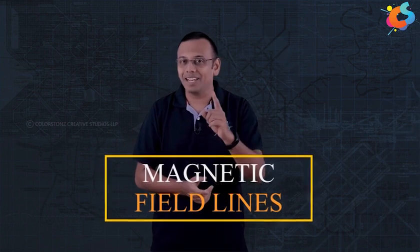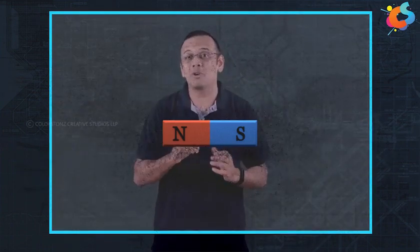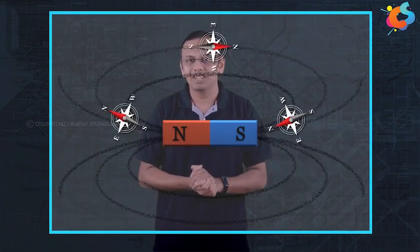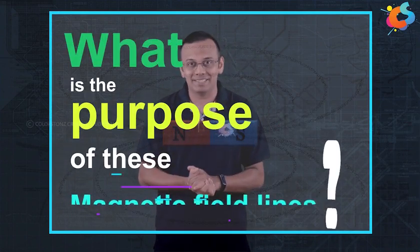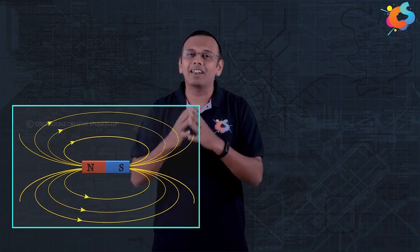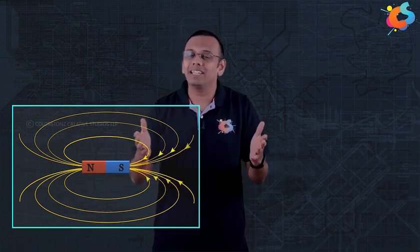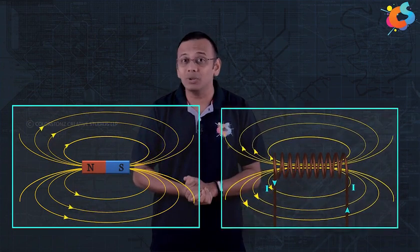If you recall, in 10th class, you must have studied about magnetic field lines. You must have also done an experiment where we take a bar magnet and we try to draw the magnetic field lines around it using a compass. What was the purpose of these magnetic field lines? They help us in visualizing, in creating a picture of the magnetic field around any magnet or even a current-carrying solenoid.